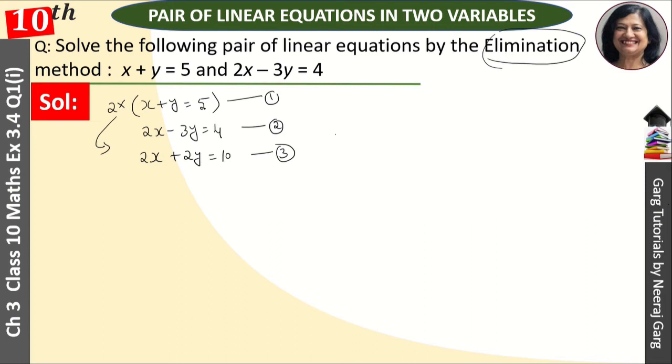And remember, we have to multiply this 2 with the entire equation. Students sometimes multiply x and y but forget to multiply 5. These small mistakes cause the question to become wrong.